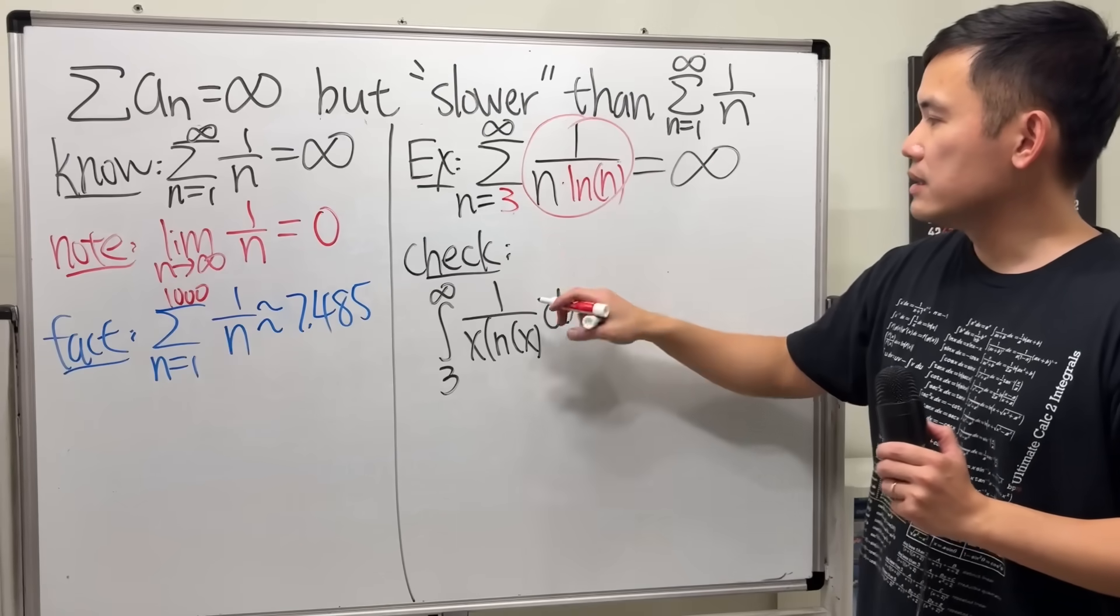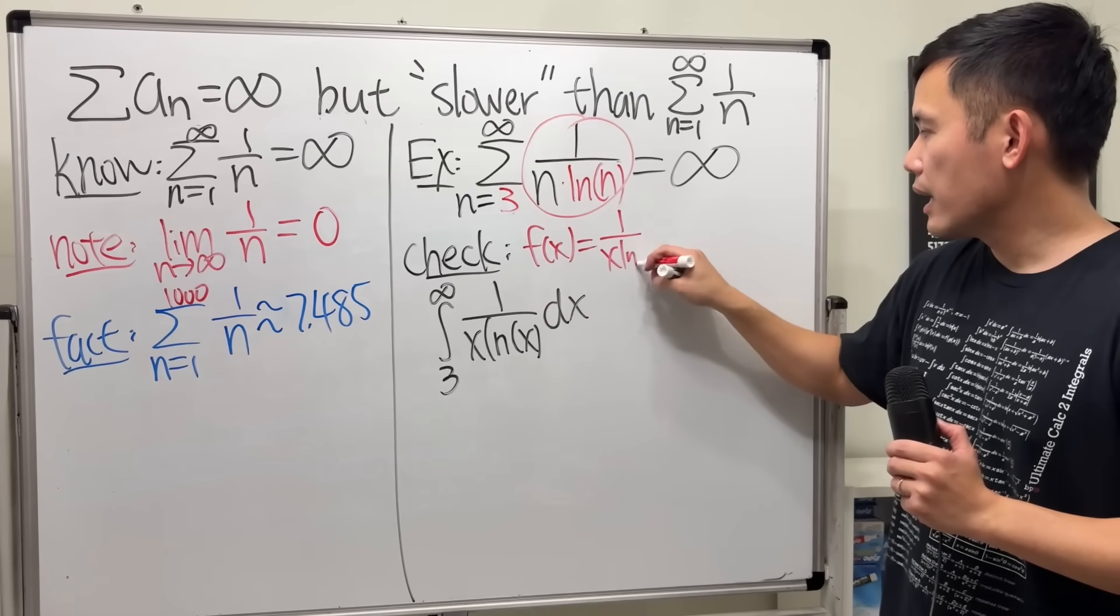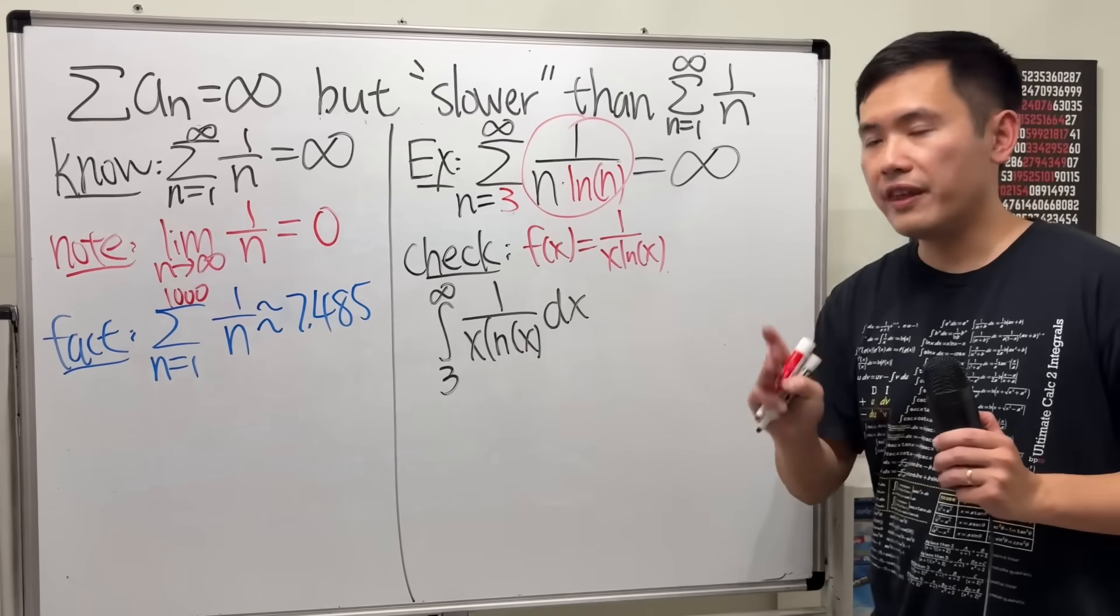Check the integral as x goes from 3 to infinity of 1 over x times ln x. Now, why the integral test? Well, you look at this, convert that into a function and then mention 3 things.